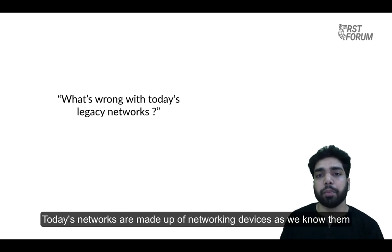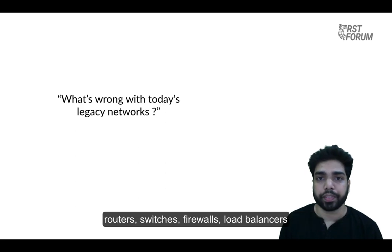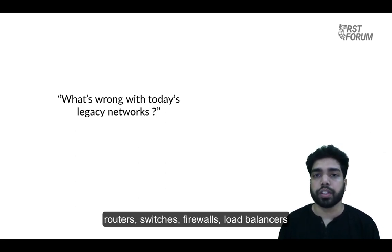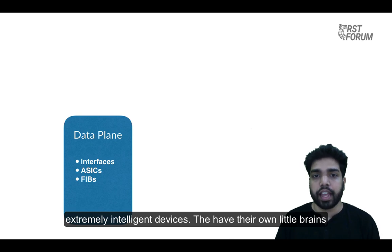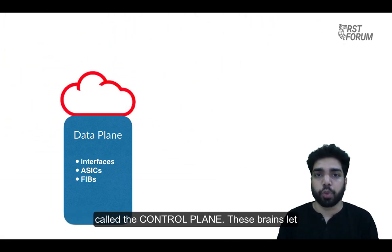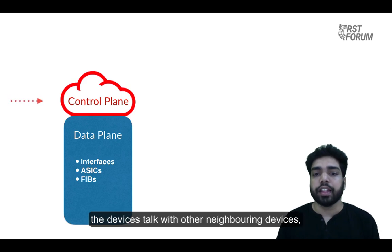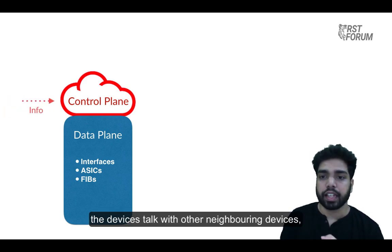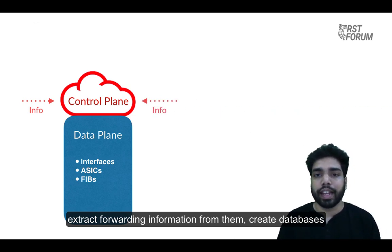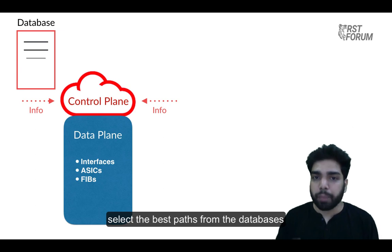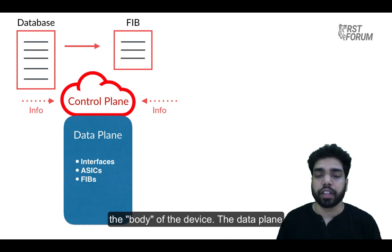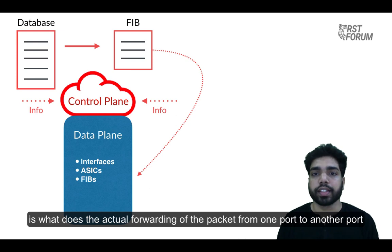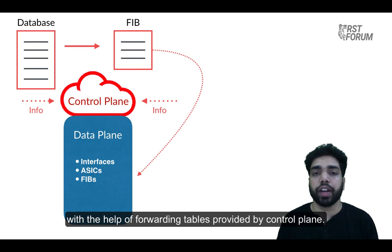Today's networks are made up of networking devices as we know them — routers, switches, firewalls, load balancers. These devices are extremely intelligent devices. They have their own little brains called the control plane. These brains let the devices talk with other neighboring devices, extract forwarding information from them, create databases, select the best paths from the databases, and push these best paths down to the data plane — the body of the device. The data plane is what does the actual forwarding of packets from one port to another port with the help of the forwarding tables provided by the control plane.